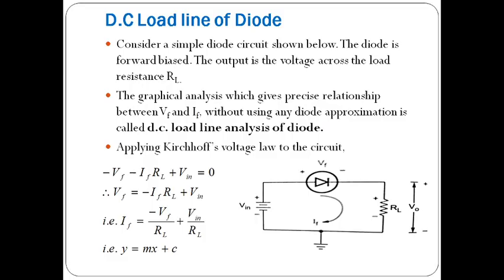Today we will discuss about the DC load line of a diode. This DC load line is one of the graphical methods to analyze many diode circuits which are much more complicated than the p-n junctions. It is also a graphical method to analyze electronic circuits — not only diodes, you can apply this to any electronic device, whether it be BJT or MOSFET or anything.